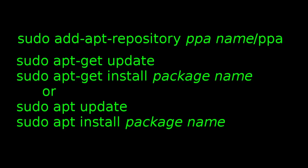Then the second line is usually the same for every one — that's either sudo apt-get update or sudo apt update. And the last line is specific to the package name: sudo apt-get install, whatever the package name is.